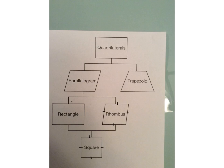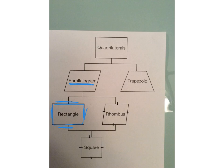Now let's take a look at the rectangle and name all of its classifications. A rectangle is also a parallelogram because it falls underneath it on the family tree — parallelograms have two sets of parallel sides, and so does a rectangle: this side is parallel to this side, and this side is parallel to this side. A rectangle is also a quadrilateral. So this shape can be called a rectangle, a parallelogram, and a quadrilateral. The best name is rectangle.